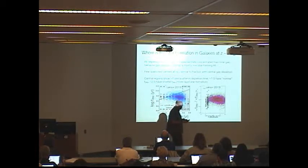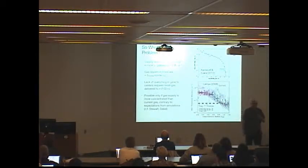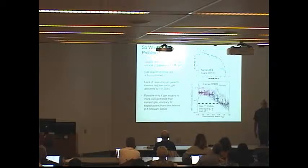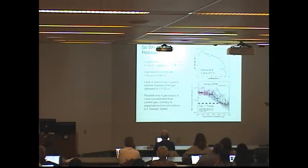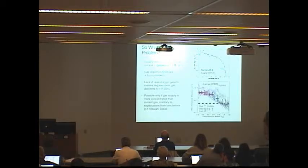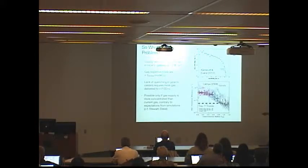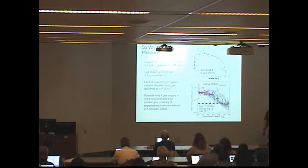This is a problem. In order to supply that star formation in a typical L-star galaxy today, you need about a solar mass per year. Here's a plot of the Schechter function for star formation rate in the local universe — order of solar mass, a few solar masses per year, is the L-star for star formation. Inside R25, the time to consume your available gas supply is much less than the Hubble time. That's true at z=0, and we heard from Linda that it's true at high z also.